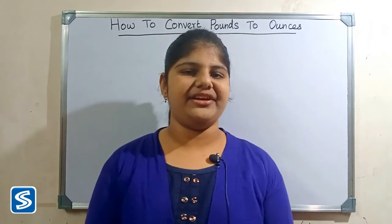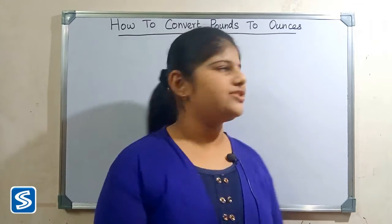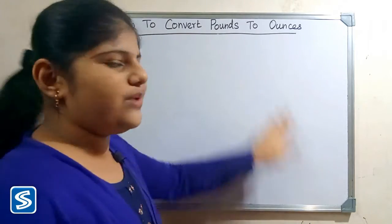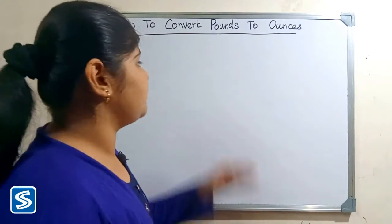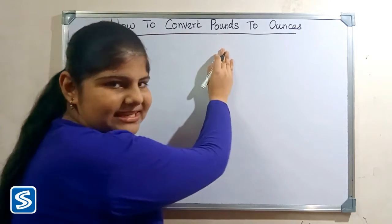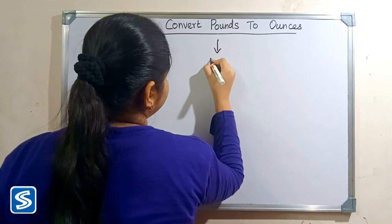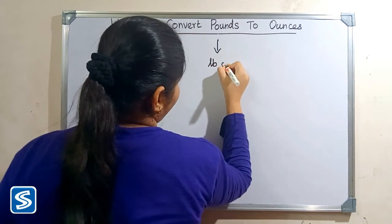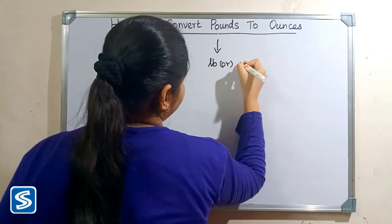Hi friends, welcome to So Much Channel. In this video I'm going to teach how to convert pounds into ounces. Pounds and ounces are the imperial system mass units. The short form of pounds is lb or lbs.